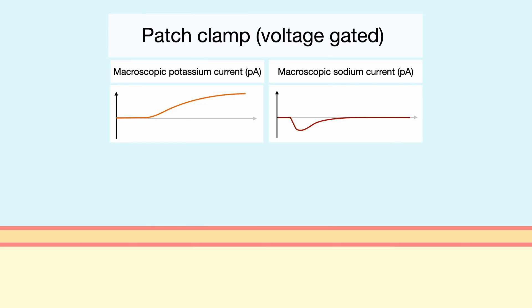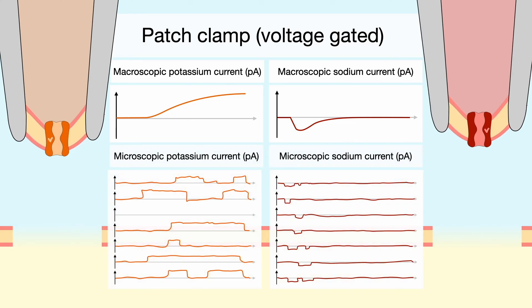Now what is more interesting to us, however, is to see if the patch clamp method can give us a bit of insight as to why the macroscopic current from voltage-gated potassium channels is so different from the current coming from voltage-gated sodium channels. It turns out that when one performs multiple trials of the patch clamp experiment on both voltage-gated channels, the individual currents coming from the channels have the same general differences. The potassium current is delayed and sustained whereas the sodium current opens first and rapidly inactivates.